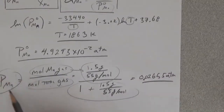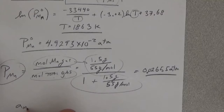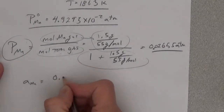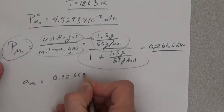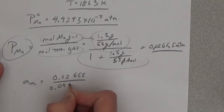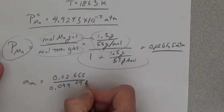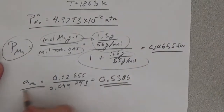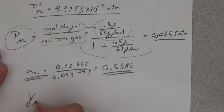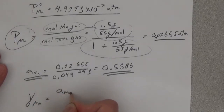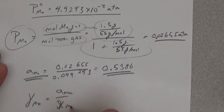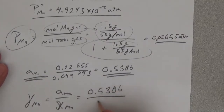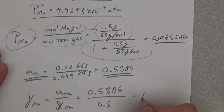This means the activity of manganese in solution is equal to 0.02655 divided by 0.049293, which equals 0.5386. Therefore, the activity coefficient of manganese equals 0.5386 divided by x_Mn of 0.5, giving a final answer of gamma_Mn equals 1.08.